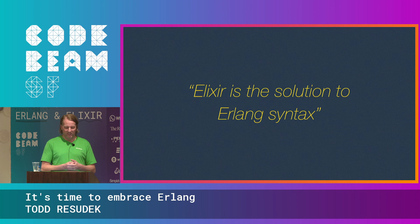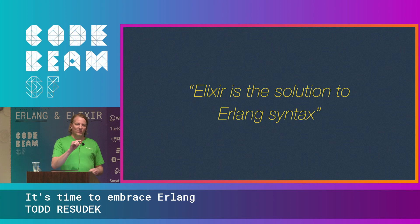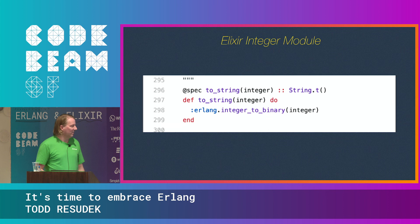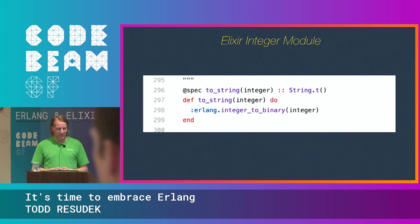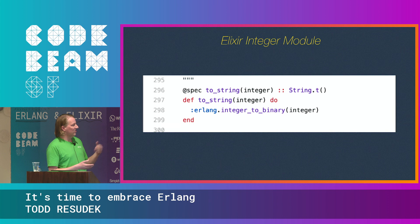As I was learning Elixir and going through the standard library, you may have seen in the function definitions the braces that link you to the source code on GitHub. Being curious as I am, I started doing that, and more often than I expected I would see stuff like this. This is actually in the Integer module — if you want to change an integer to a string, we've written this great function in Elixir, and what does it do? It just delegates down into the Erlang standard library.